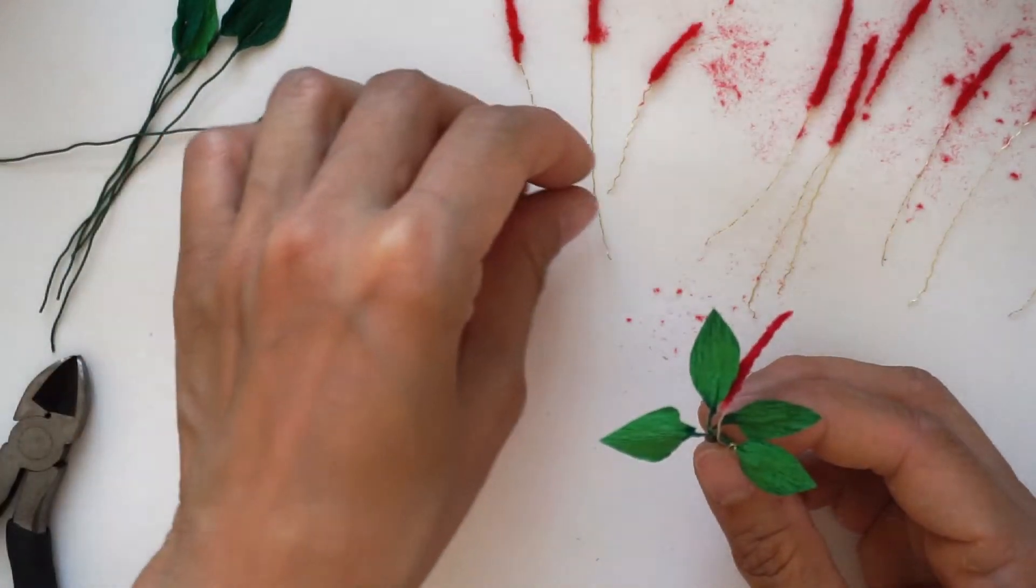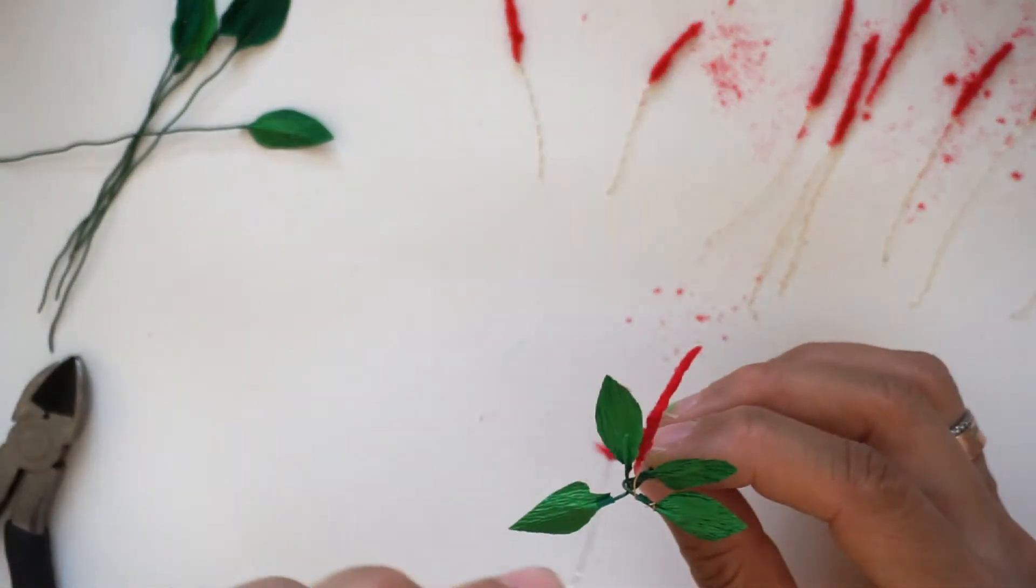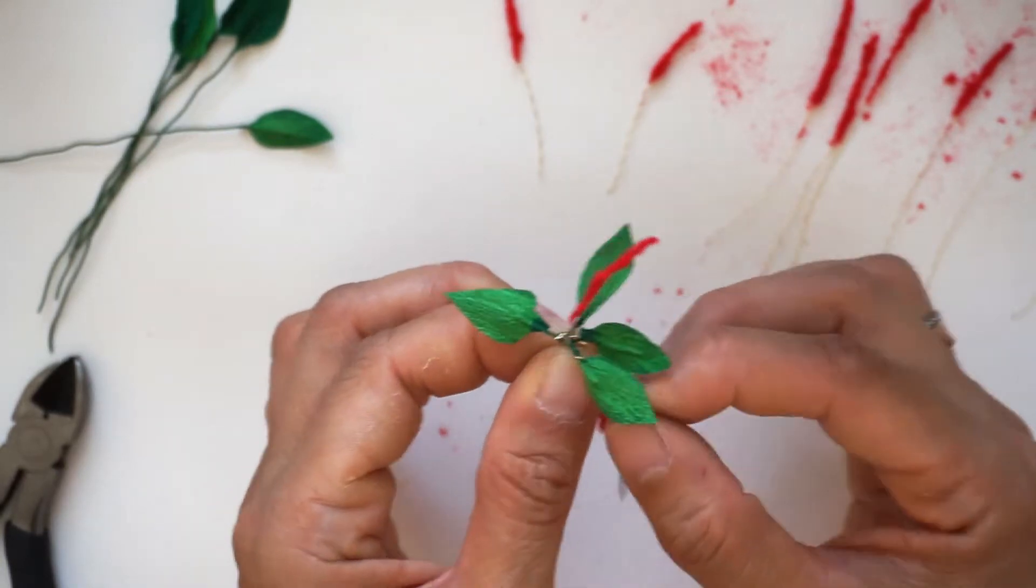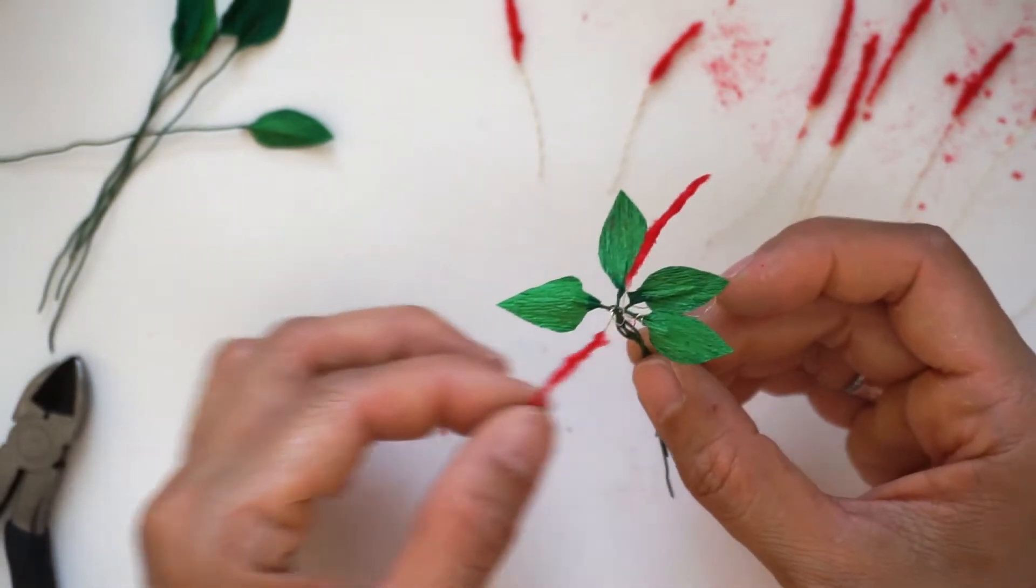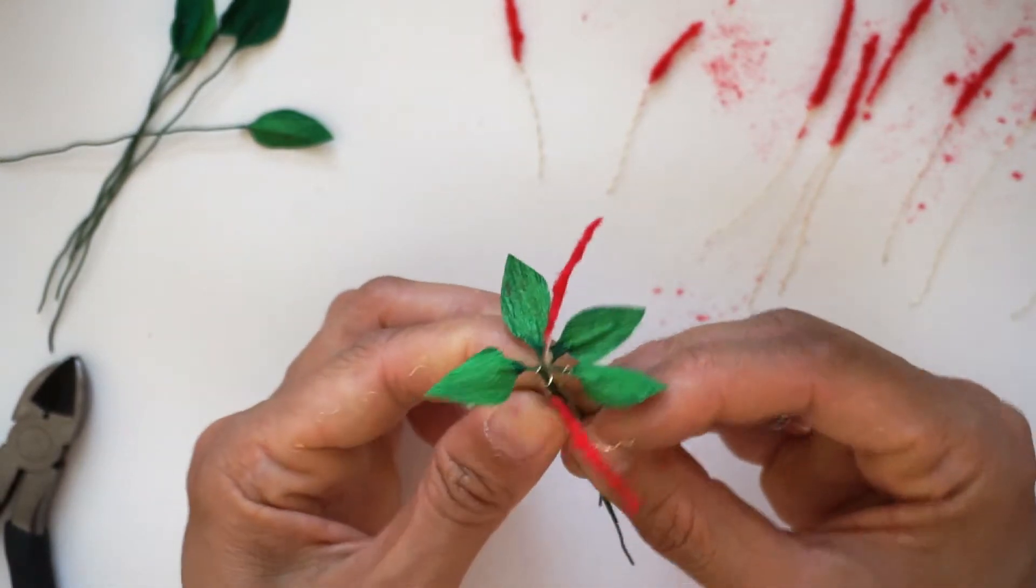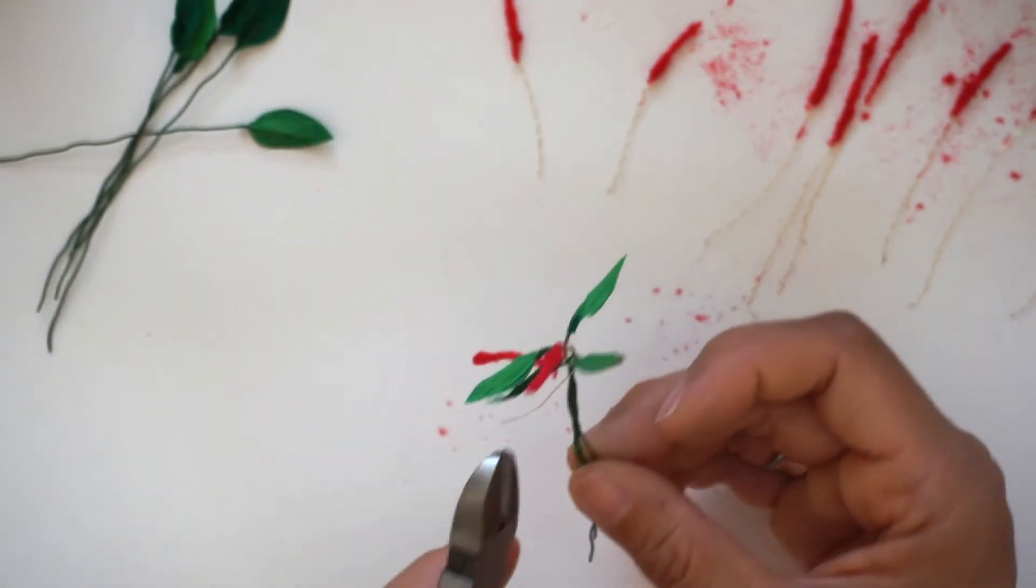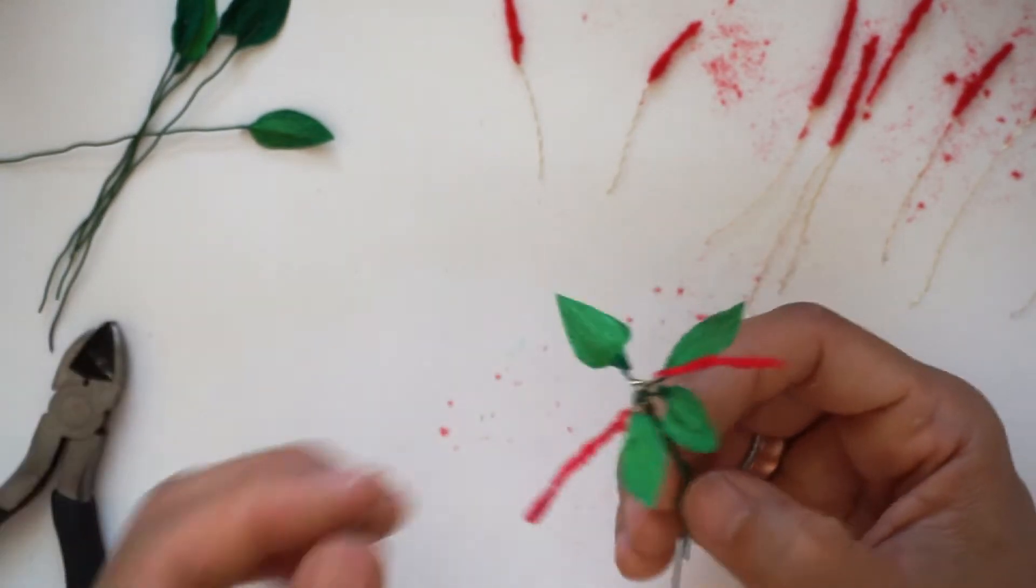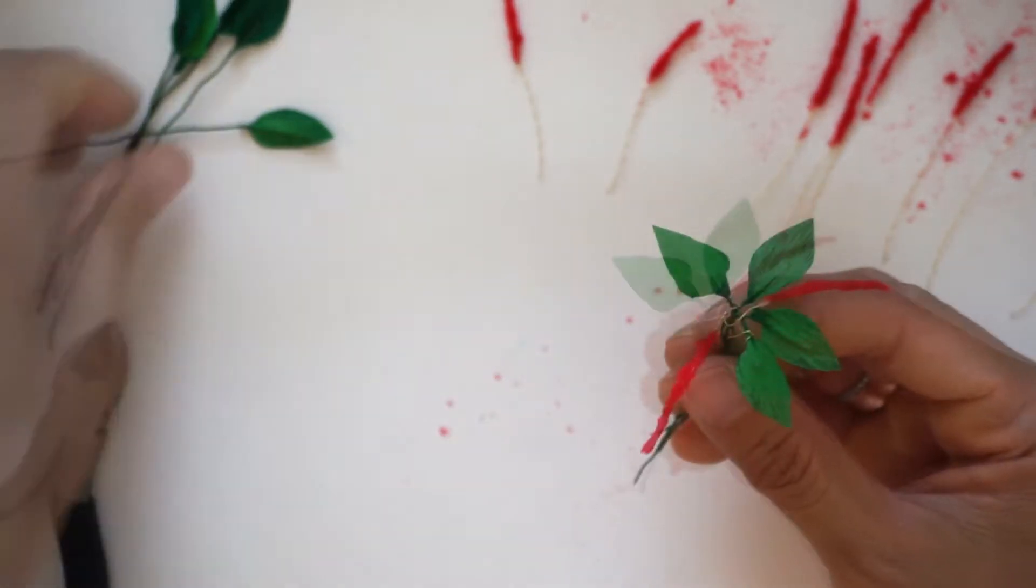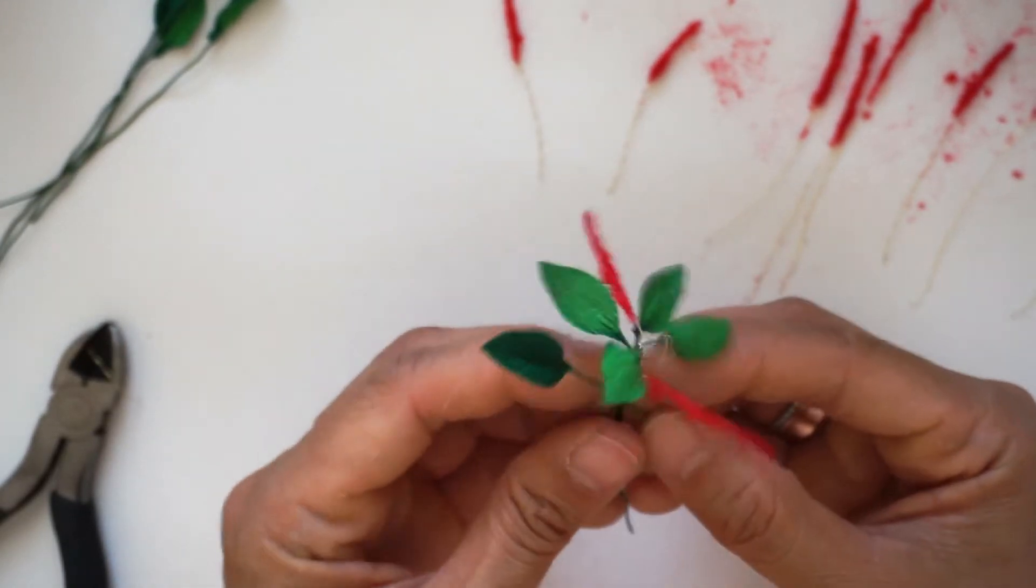Add several fox tails in between the leaves and cut the excess wire. Then again, add another new set of leaves and fox tails to complete the whole plant.